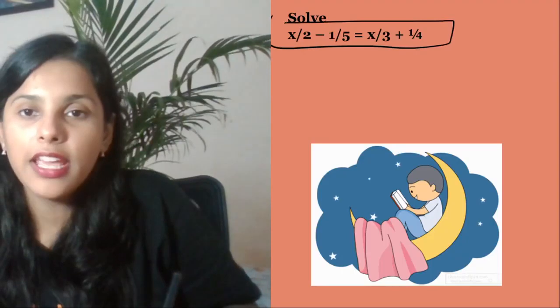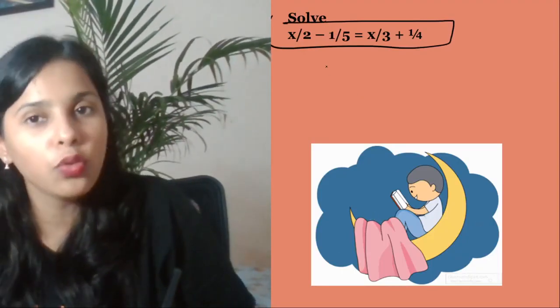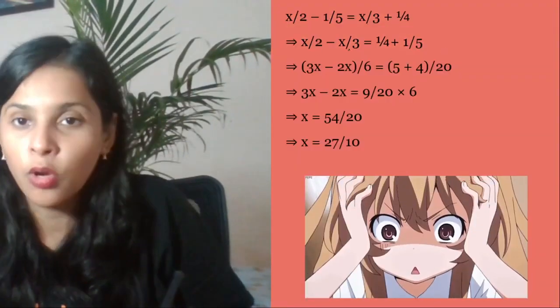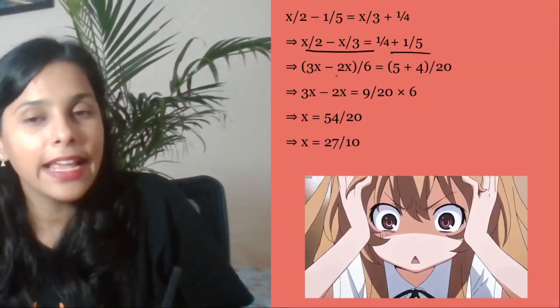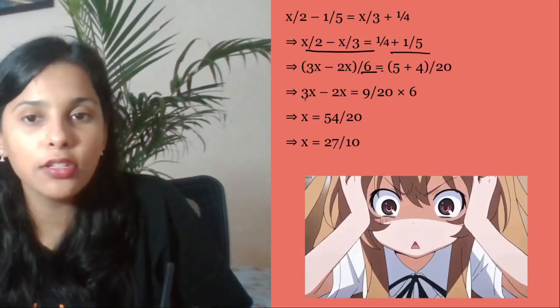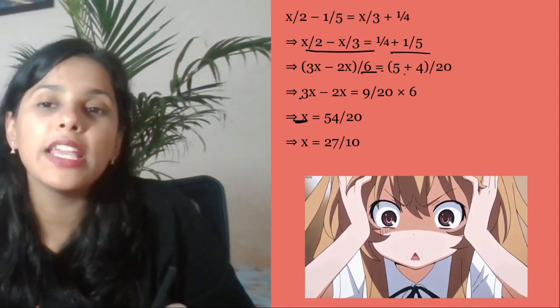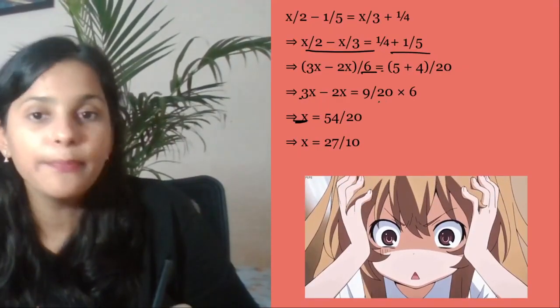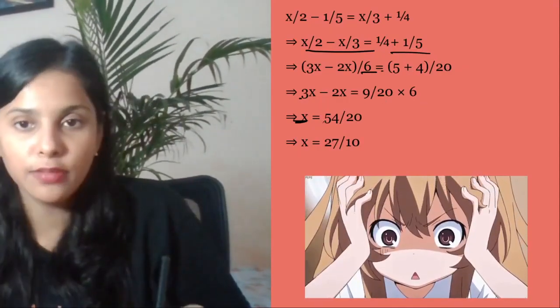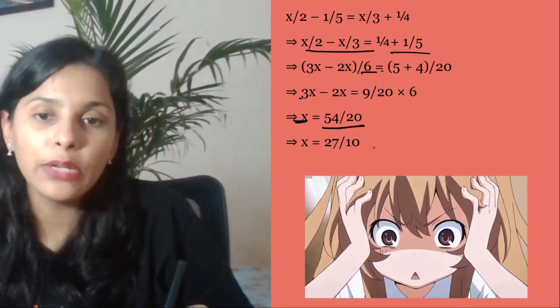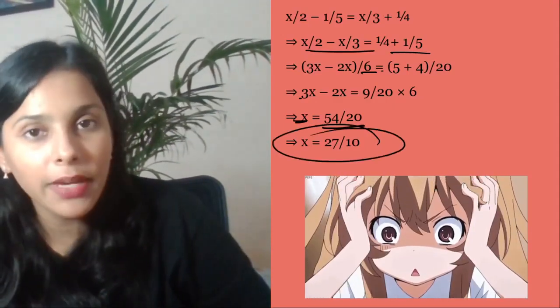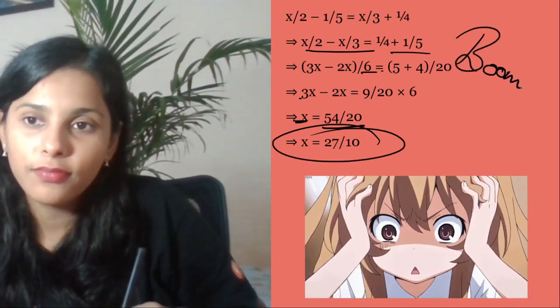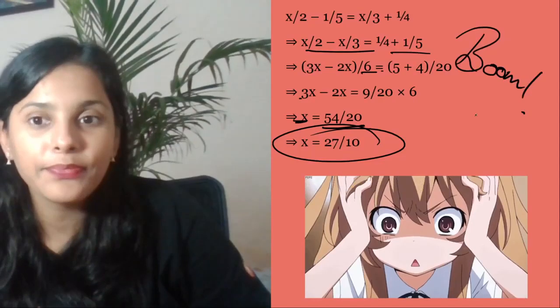Solve this question. You need to find the value of x again. So solve it - take x to one side and normal terms to the other side. X terms together on one side. Taking LCM, 6 comes. 3x minus 2x, you get x remaining. And here also take LCM, 20 comes. 5 plus 4 is 9/20. You take this 6 to RHS. So it becomes 54/20. And x ki value comes out as 27/10. Boom ho gaya na.